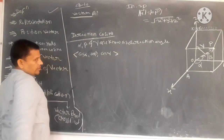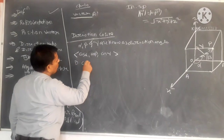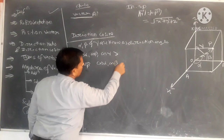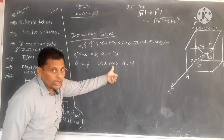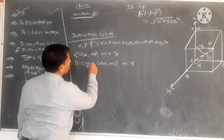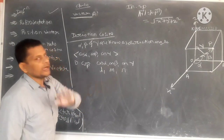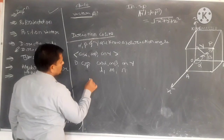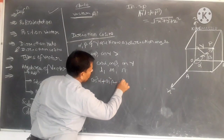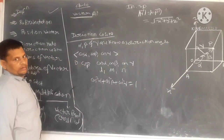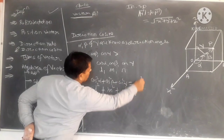The direction cosines are always defined for either a line or a vector. The direction cosines of vector OP are cos α, cos β, cos γ. These are always written in brackets. cos α is denoted by L, cos β by M, and cos γ by N. So we can also denote them as (L, M, N). These are the direction cosines. There is one relation that we will prove: cos²α + cos²β + cos²γ = 1, or L² + M² + N² = 1.